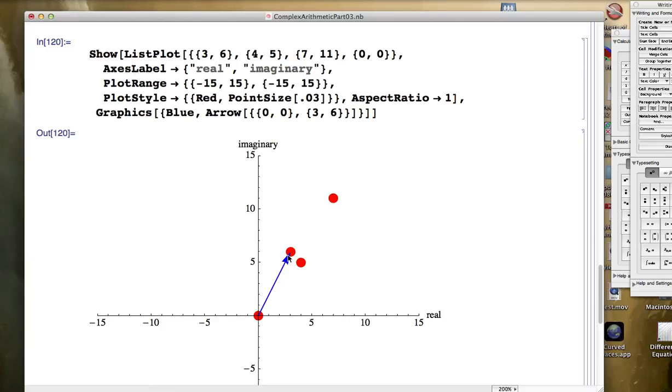The length of this vector, the length of this arrow, could be found by using the Pythagorean theorem. For example, you could draw a perpendicular from the tip of the arrow down to the real axis here, making the right angle right there, and use the Pythagorean theorem to figure out the length of the arrow. I guess it would be the square root of 45. Three squared is nine. Six squared is 36.